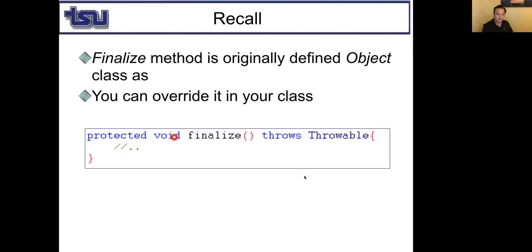Finalize doesn't take any input arguments, doesn't return anything, and it is protected. So if I want to override finalize in my class, I must use either protected or a less restrictive access modifier, which is public. You cannot use the default (none) or private. And finalize throws Throwable. When you override a method that throws Throwable, the overriding method must either throw Throwable, one of its subclasses, or nothing at all. We discussed this in the exception handling video lecture.